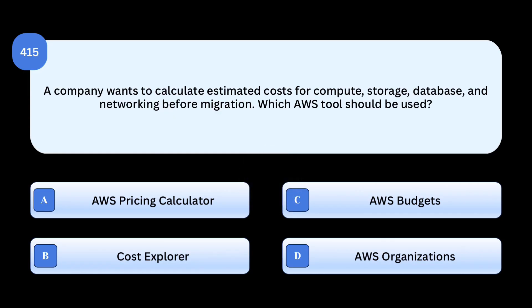Correct answer: AWS Pricing Calculator. The AWS Pricing Calculator is designed to estimate monthly AWS costs for planned architectures. Why others are incorrect: Cost Explorer analyzes existing cost and usage, not future estimates. AWS Budgets sets cost and usage limits, not initial cost estimation. AWS Organizations manages multiple AWS accounts, not pricing.